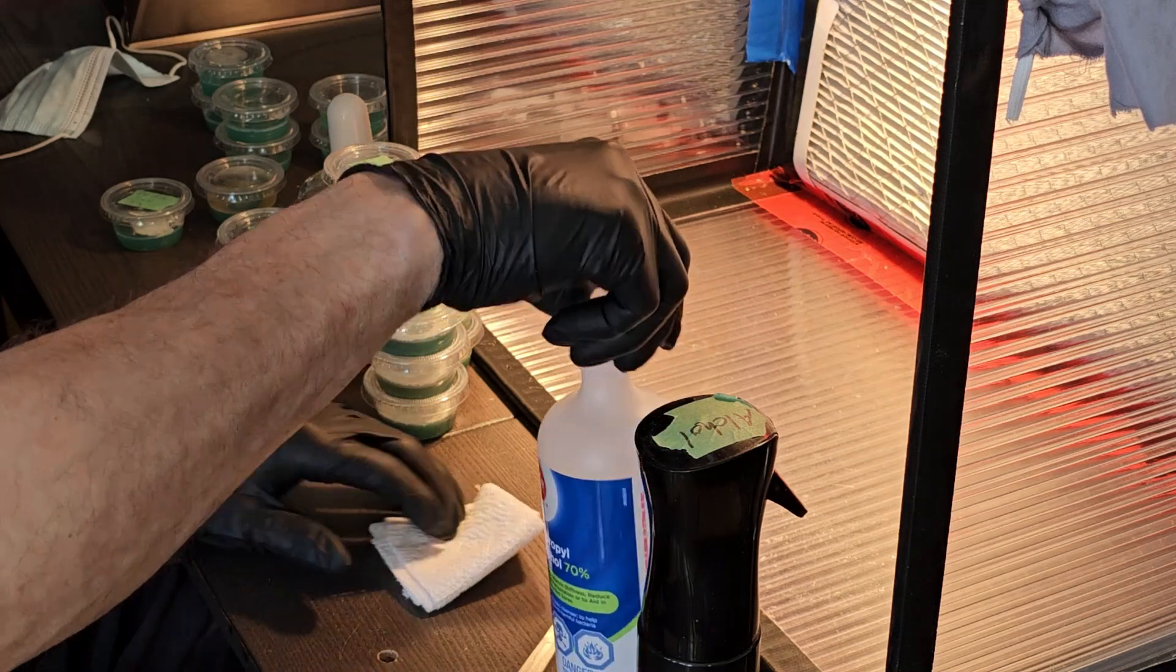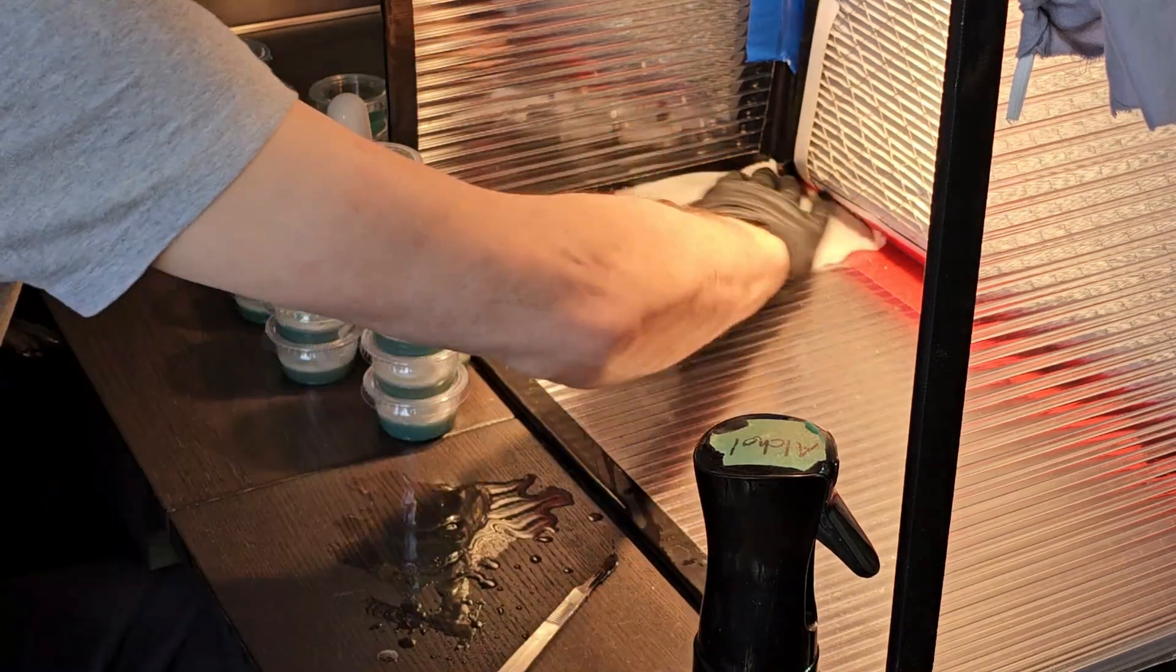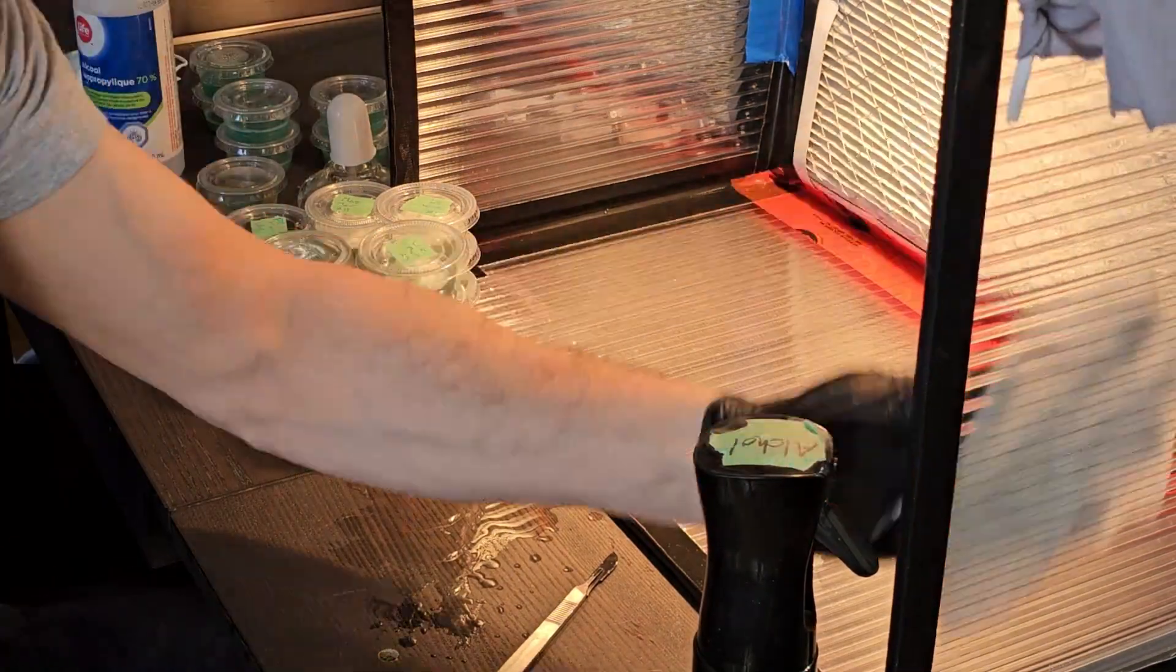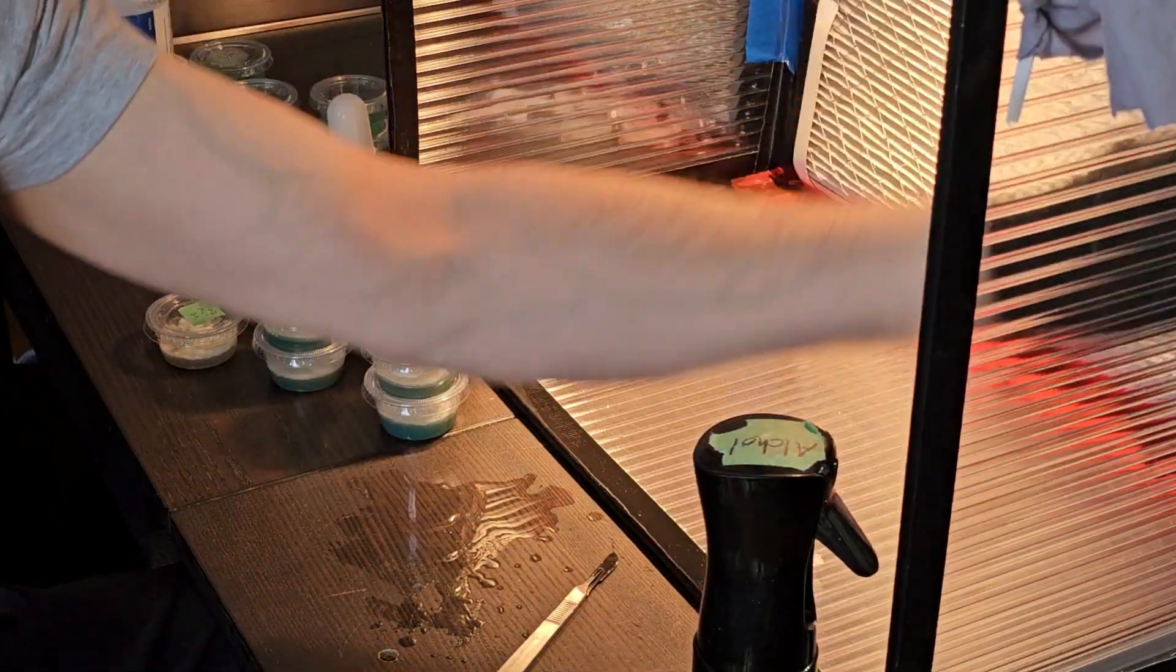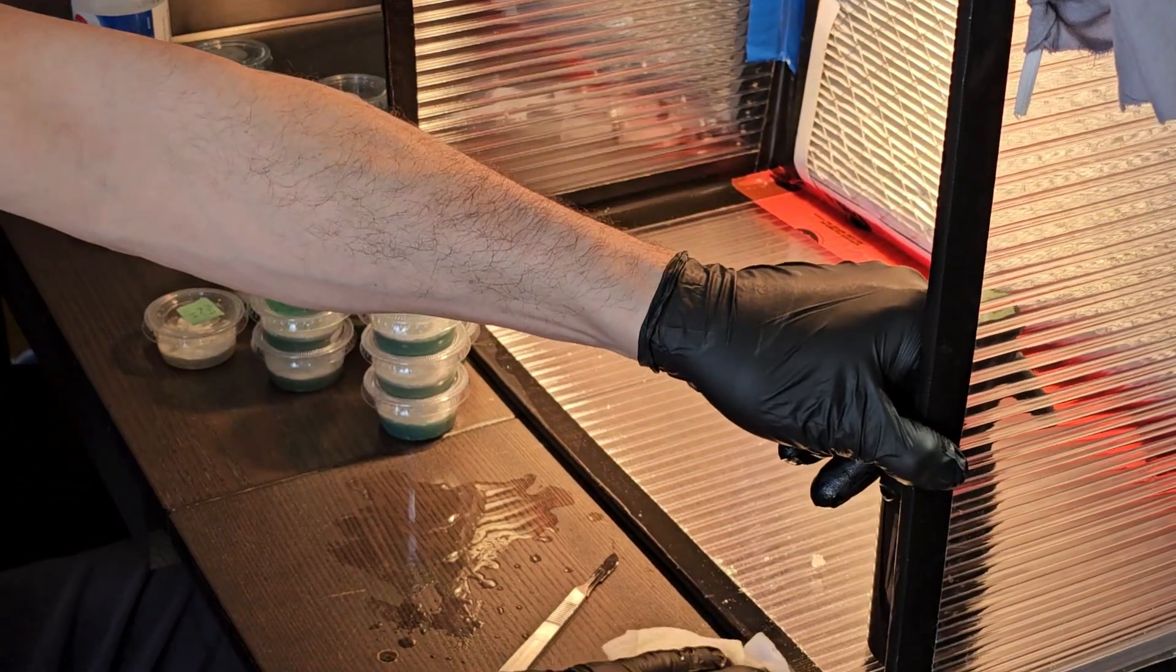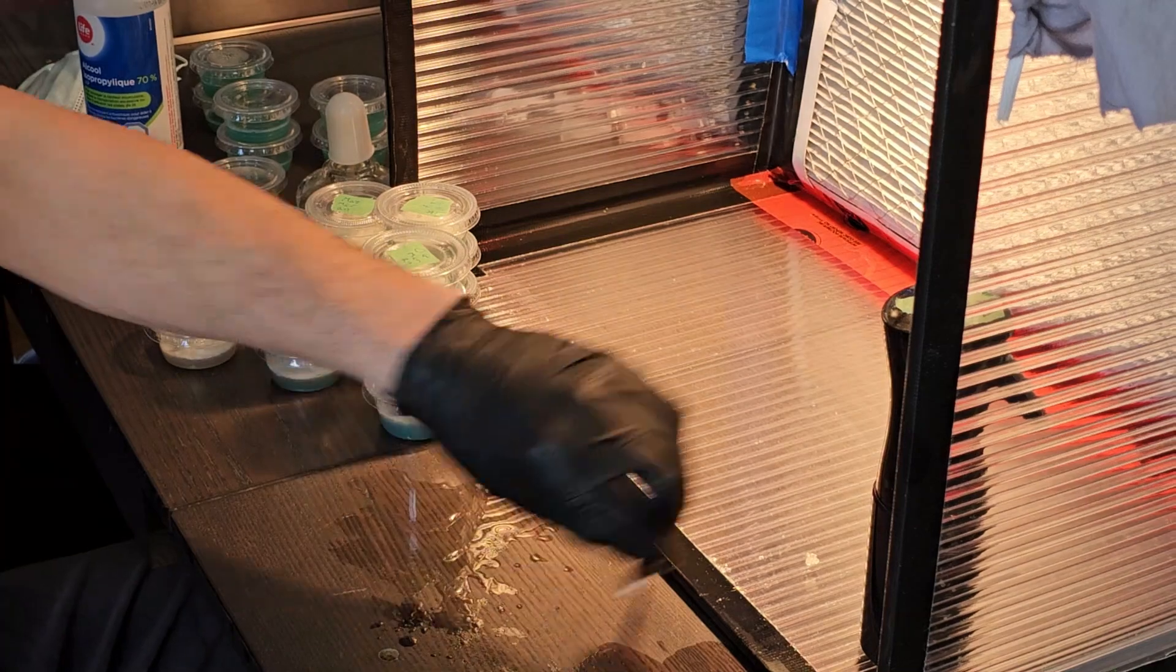So first we're going to soak our paper towel and wipe down all inside of your hood fan area if you have one, or your table or your working space depending on your setup.